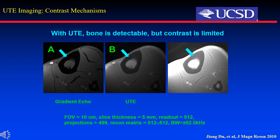The comparisons of UTE acquisition and conventional GRE sequence are shown here. The left image is from a 2D GRE sequence with echo time of 3 ms — bone is completely dark. The middle one is UTE imaging without long T2 suppression, where bone has poor contrast due to low water concentration. The right one is the same UTE acquisition with modified image contrast by changing window levels.